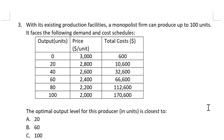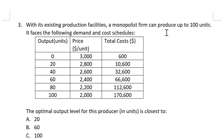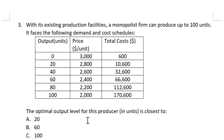Question 3. With its existing production facilities, a monopolist firm can produce up to 100 units. It faces the following demand and cost schedules. The optimal output level for this producer is closest to: